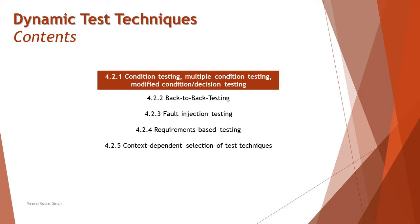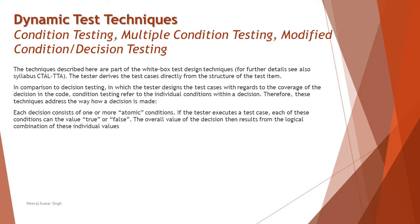We will get into the depth of all these things one after the other, but this tutorial we are getting started with 4.2.1 — condition testing, multiple condition testing, and MCDC, which is modified condition decision testing. Here the approach is not just about understanding the technique, it is more about applying it. As an automotive tester, you need to know exactly what condition testing is and how it differs from MCT and MCDC.